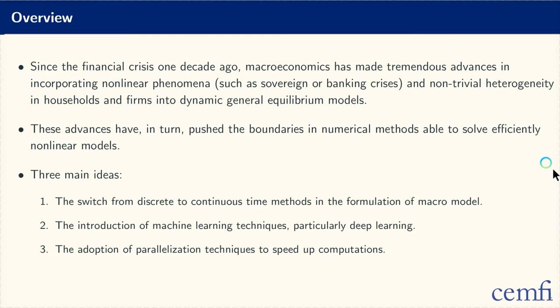And third, we have learned how to adopt parallelization techniques to speed up computations. These days, even the most basic laptops come with four-core processors, and we want to take advantage of those. Even more, it is extremely easy and cheap to have access to a cloud service such as Amazon Web Services, and for just a few euros have access to a very powerful machine for many hours. Suddenly, massive parallelization is something within reach of every graduate student or young researcher.